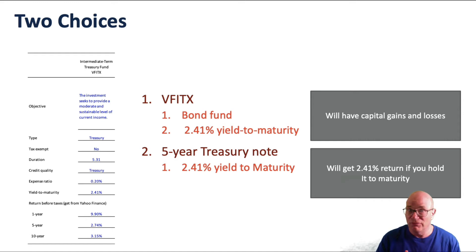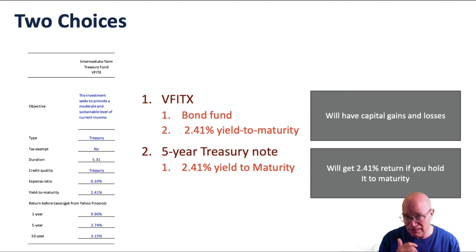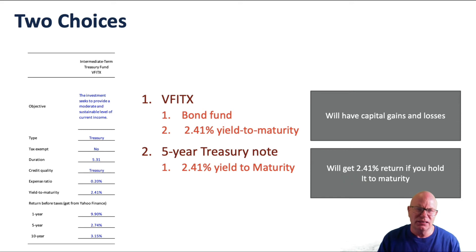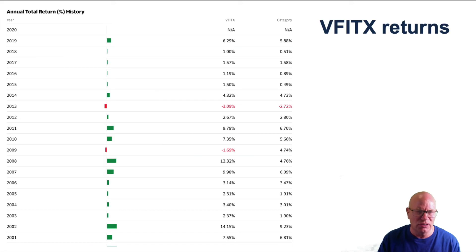With the bond fund, you don't have the option — you will have risk, in this case duration risk or interest rate sensitivity. With the treasury note, you can control it and will get a 2.41% return if you hold it to the end. To illustrate the return differences, here's the return history from that treasury note fund.